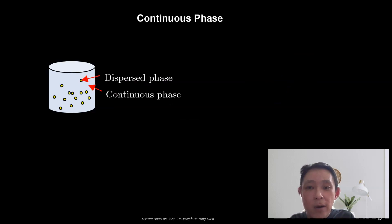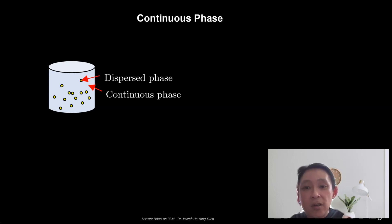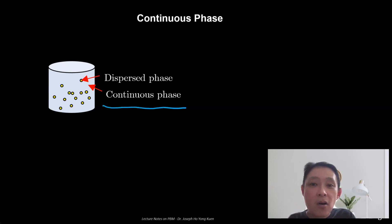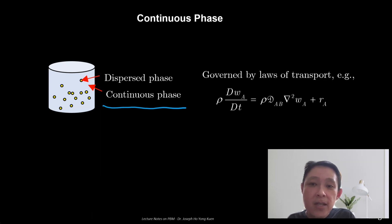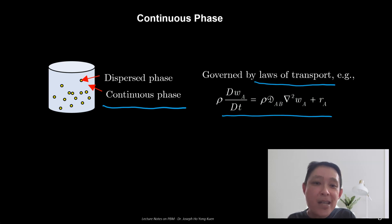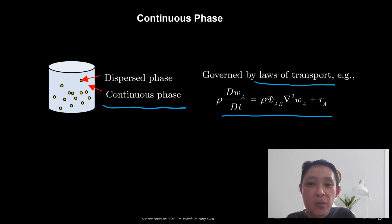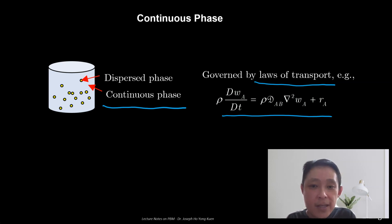There is also the continuous phase, which we have not spoken about thus far. The particle or solid is the dispersed phase, while the water or environment is the continuous phase. The continuous phase may also come into the picture when modeling physical systems like this. It is usually governed by the laws of transport — for example, the species diffusion equation if you have mass transfer. If your solids release some solute into the continuous phase, there will be some diffusion or mass transfer, and those phenomena at the continuous phase must be accounted for by the laws of transport phenomena.